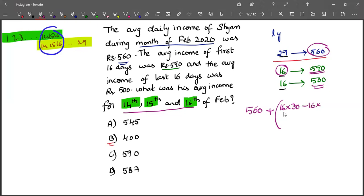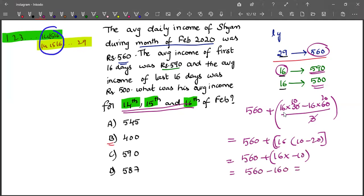So minus 16 into 60, divided by, we need to find 3 observations. So we will divide by 3. If we take 16 common, 16 of 30 minus 60. 560 plus 16 into minus 10, 560 minus 160 gives us 400.